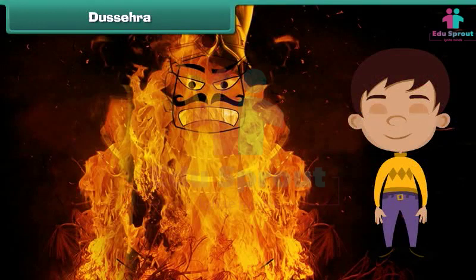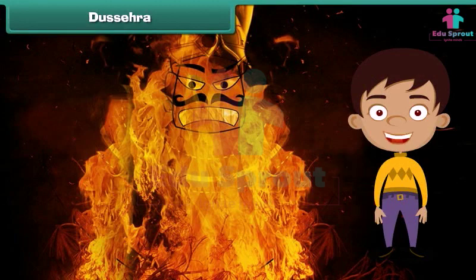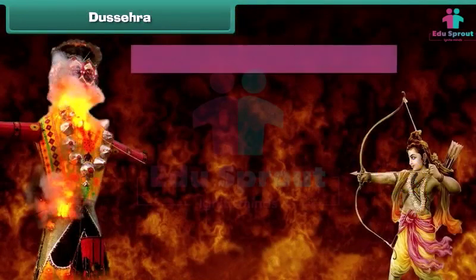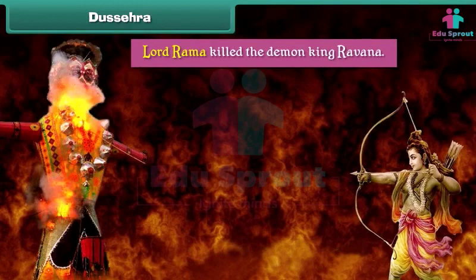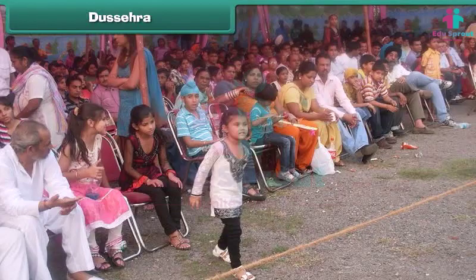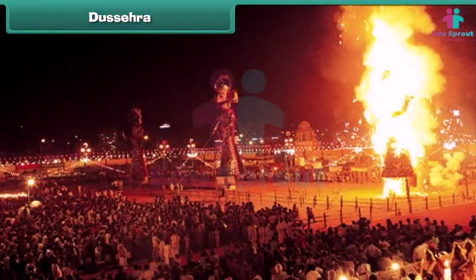Dussehra is another Hindu festival that marks the victory of good over evil. It is believed that on this day, Lord Ram killed the demon king Ravan. People gather in a large field in the evening and burn effigies of Ravan, his brother Kumbhakaran, and his son Meghanath.